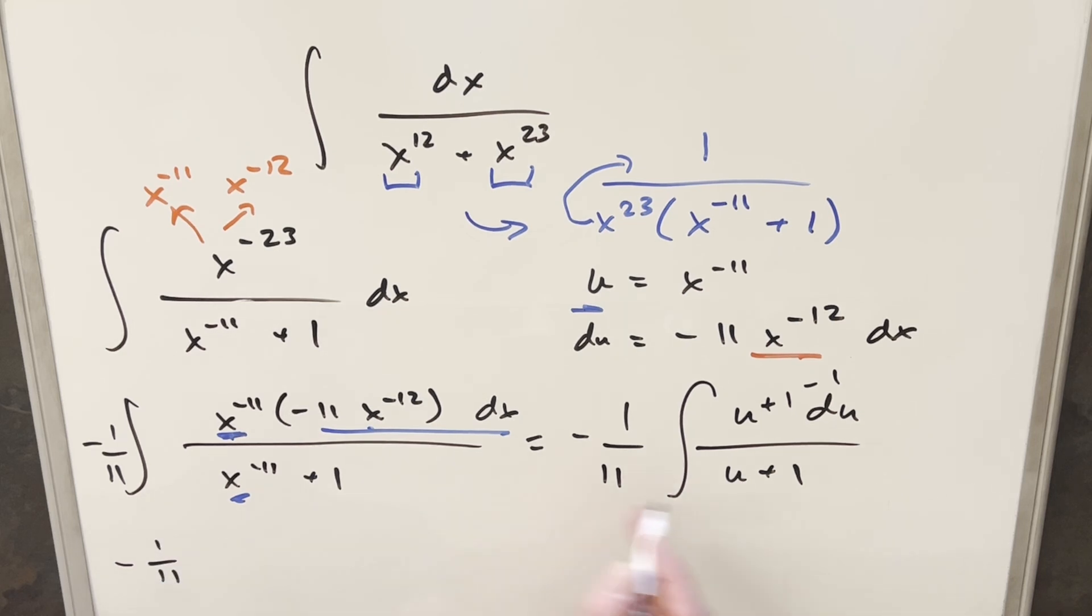So then coming back over here, we'll split this into two integrals. This first one's just going to become 1 du. The first one, when I distribute the minus to the minus, we're going to write this as plus 1 over 11 du over u plus 1.